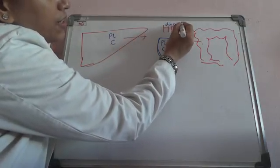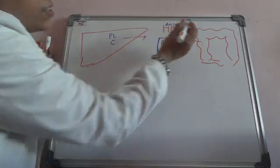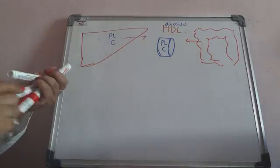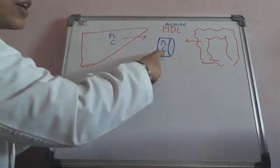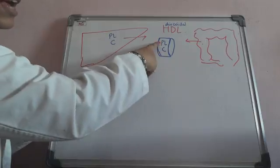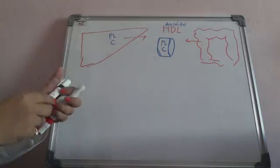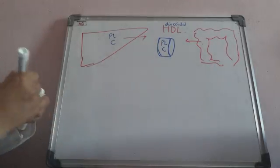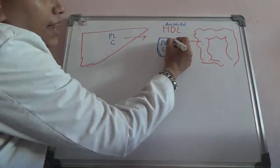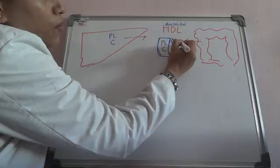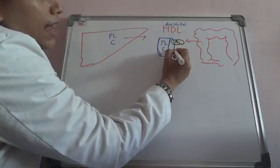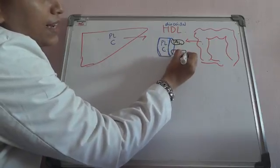So we call it discoidal HDL. A point to be noted is it is having only cholesterol and phospholipids. In addition it is having ApoA1 and also LCAT.